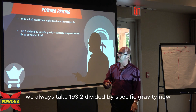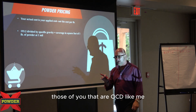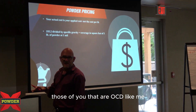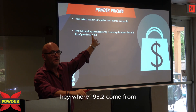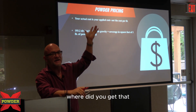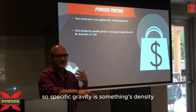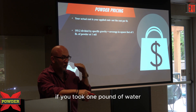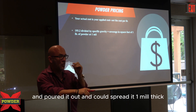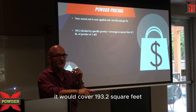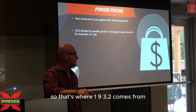We always take 193.2 divided by specific gravity. Now, those of you that are OCD like me, the very first question I ask is: where did 193.2 come from? Specific gravity is something's density in relation to water. If you took one pound of water and poured it out and could spread it one mil thick, it would cover 193.2 square feet. So that's where 193.2 comes from.